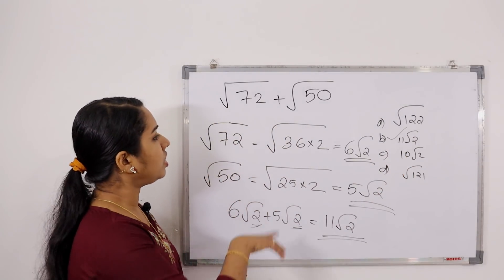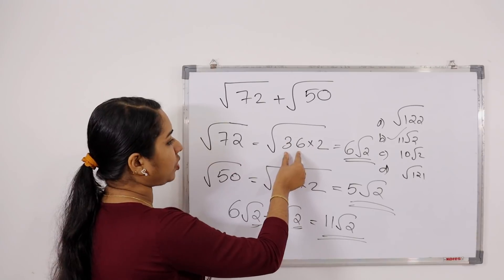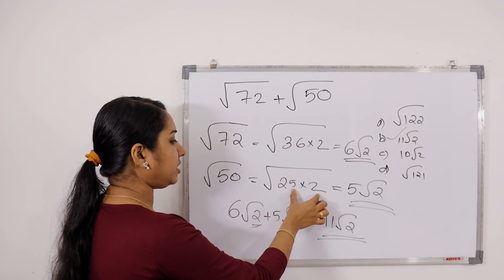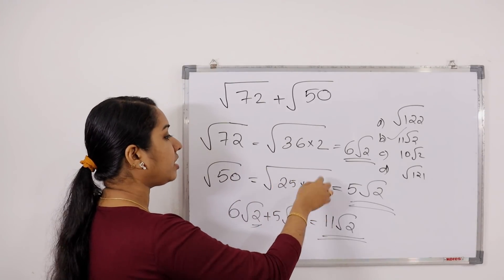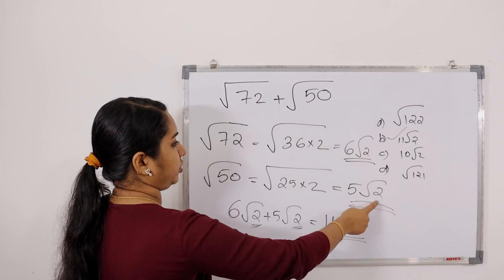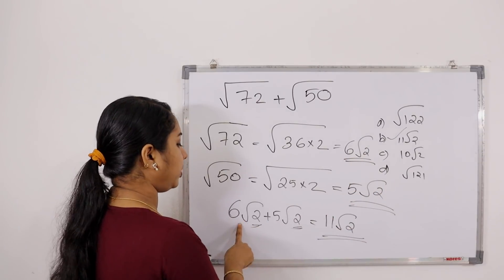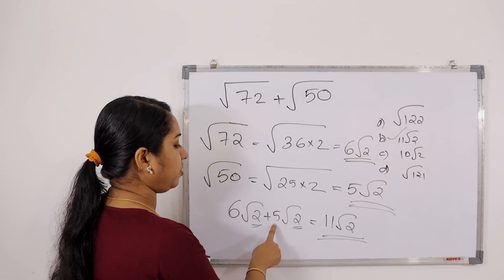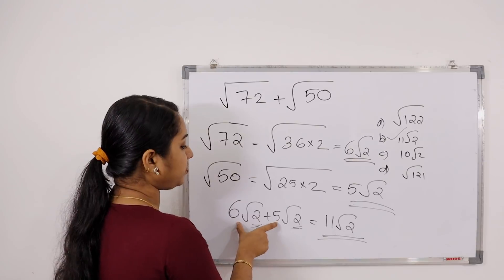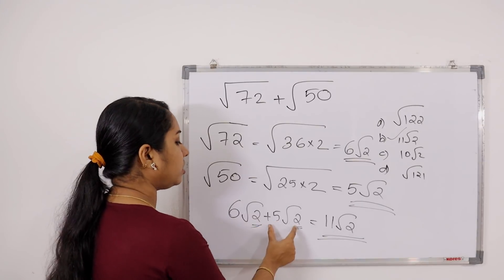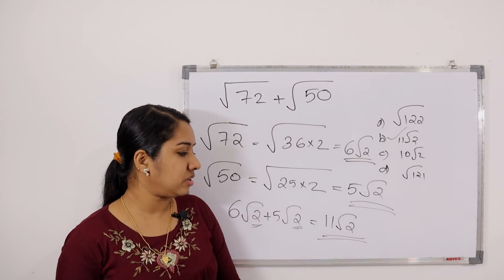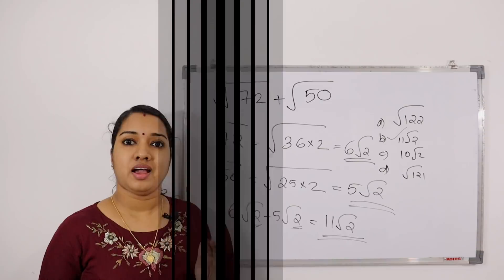If you don't have a perfect square, there will be no √2 outside. So if we add 6√2 and 5√2, the result is 11√2. The answer is 11√2.